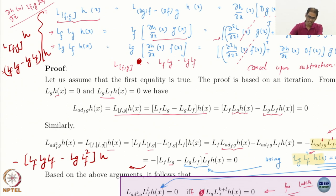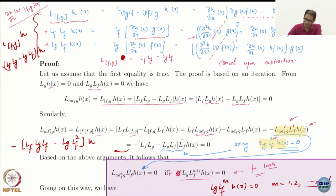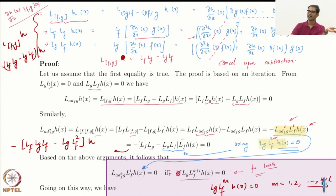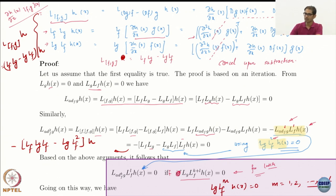So it is like: L_{[f,g]} h equals Lf Lg minus Lg Lf applied to h. Looks simple. But remember, we were trying to prove that Lg Lf, Lg Lf², and so on being 0 means that L_{ad_f g} h, L_{ad_f² g} h, and so on are also 0 — and that they are equivalent.